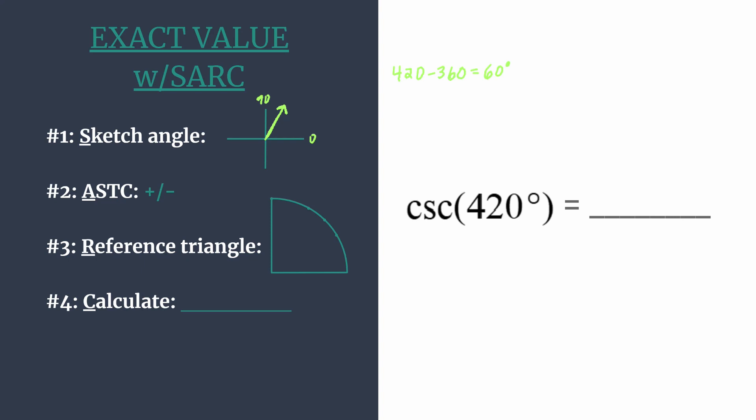Okay, so now that we have our angle sketched, we can move on to step two, thinking ASTC or all students take classes. Now here, since our angle is in quadrant one, we actually get off really easy. I love to see an angle in quadrant one because we know that all our trig functions are positive in the first quadrant, so we know our final answer should be positive.